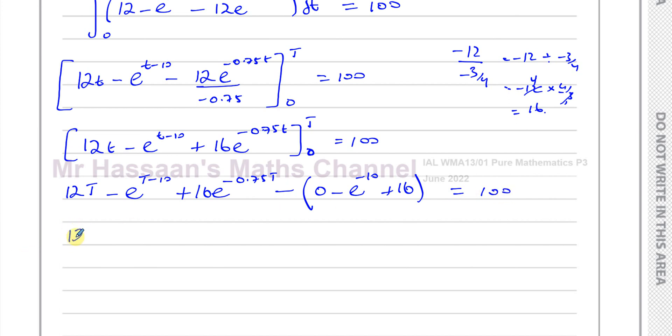Let's carry on and just simplify this a little. Here I've got plus e to the power of negative 10 and minus 16, and here I'm going to have 100. Now I want to make this T the subject of this formula. So what I'm going to do is I'm going to keep 12T on this side and everything else I will put on the other side of the equation.